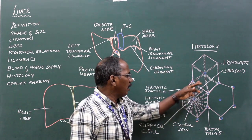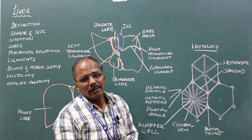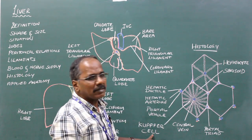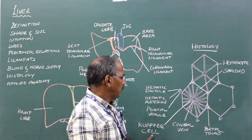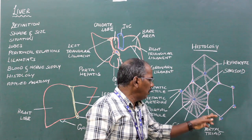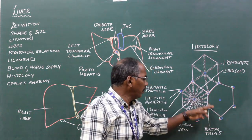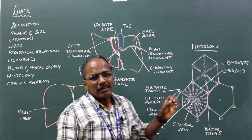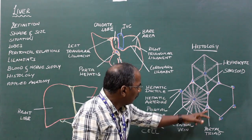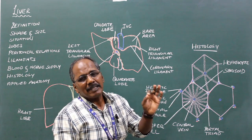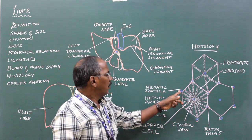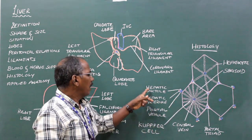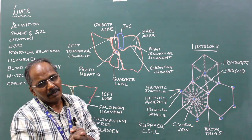The sinusoids are lined by endothelium. Some of the cells are phagocytic in nature and they are known as Kupffer cells. At the periphery of the lobules, at the corners, they have portal triads. Each triad consists of a branch from the hepatic artery, a branch from the portal vein, and a branch from the hepatic duct. These three structures together form the portal triad.